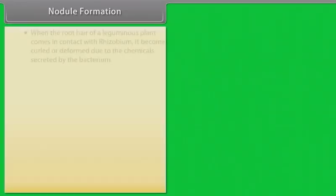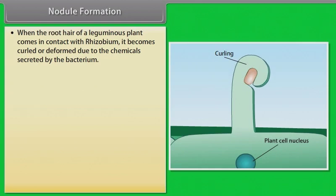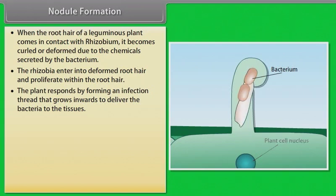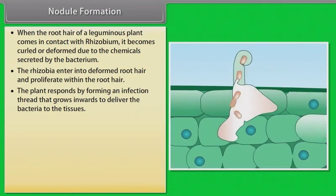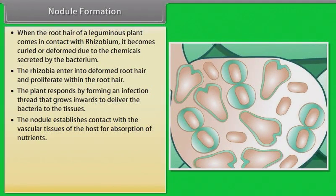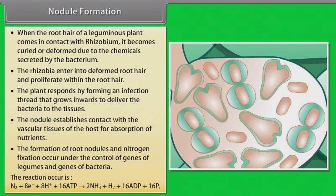Nodule formation: when the root hair of a leguminous plant comes in contact with Rhizobium, it becomes curled or deformed due to the chemicals secreted by the bacteria. The rhizobia enter into the deformed root hair and proliferate within it. The plant responds by forming an infection thread that grows inward to deliver the bacteria to the tissues. The nodule establishes contact with the vascular tissues of the host for absorption of nutrients. The formation of root nodules and nitrogen fixation occurs under the control of genes of the legume and genes of the bacteria. The reaction is: N₂ + 8e⁻ + 8H⁺ + 16ATP → 2NH₃ + H₂ + 16ADP + 16Pi.